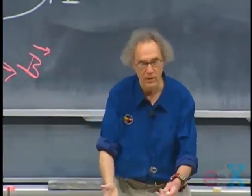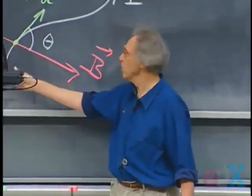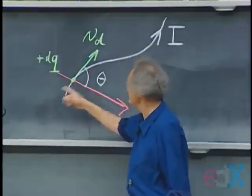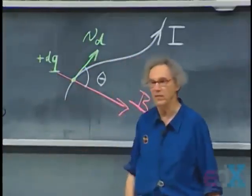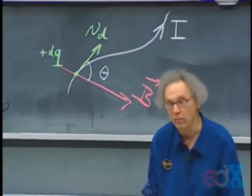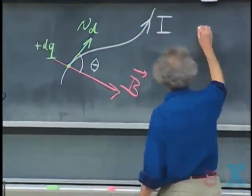So I have preferred, for mathematical reasons, to take a plus DQ charge going in this direction, rather than taking a minus DQ charge that goes with the drift velocity in that direction. So there is no difference at all in the outcome that you will see.